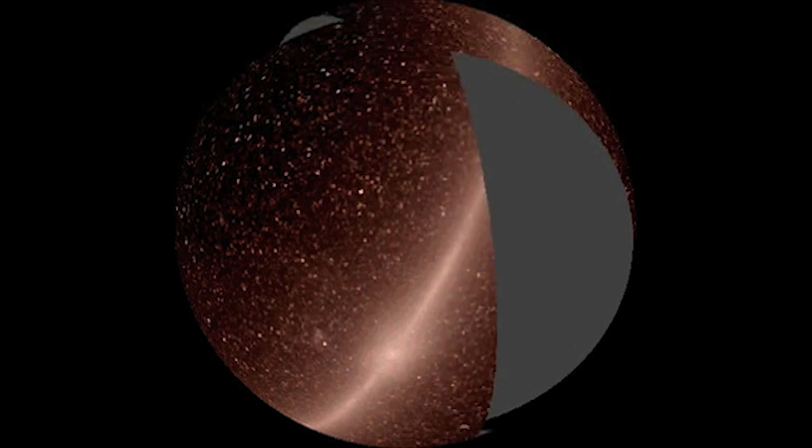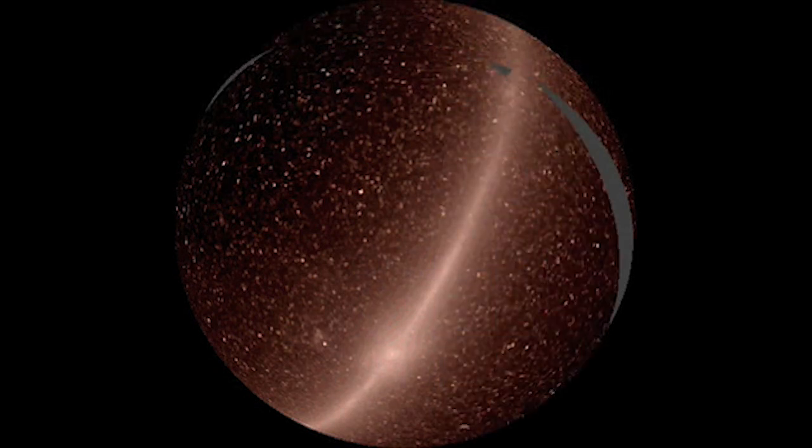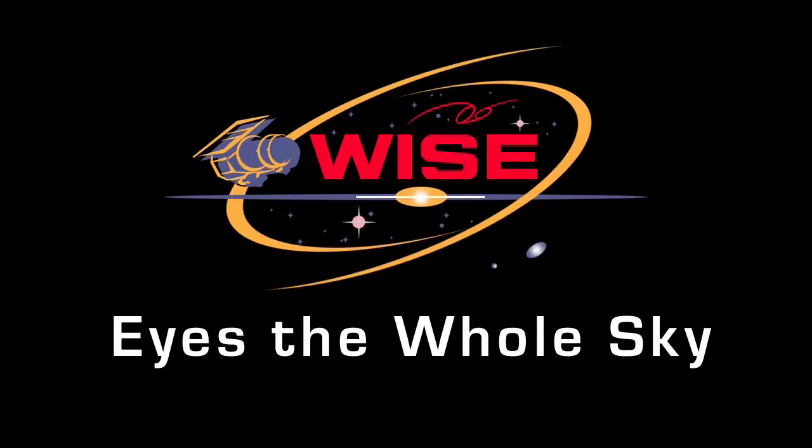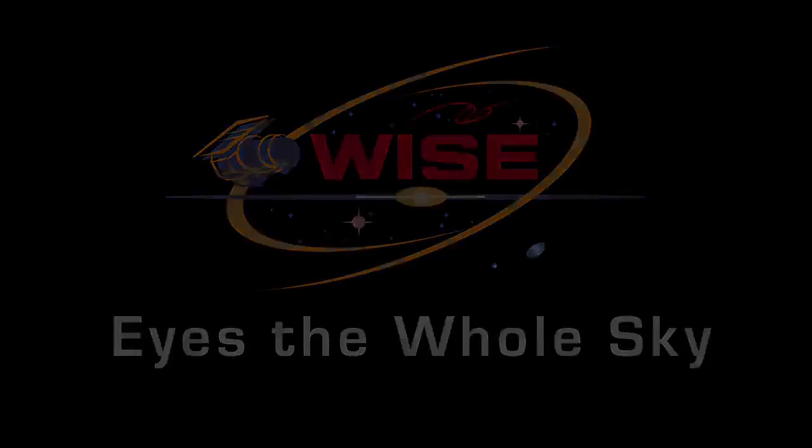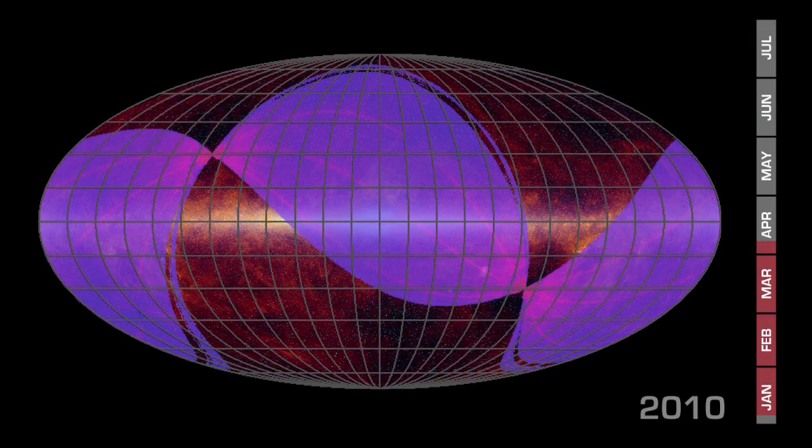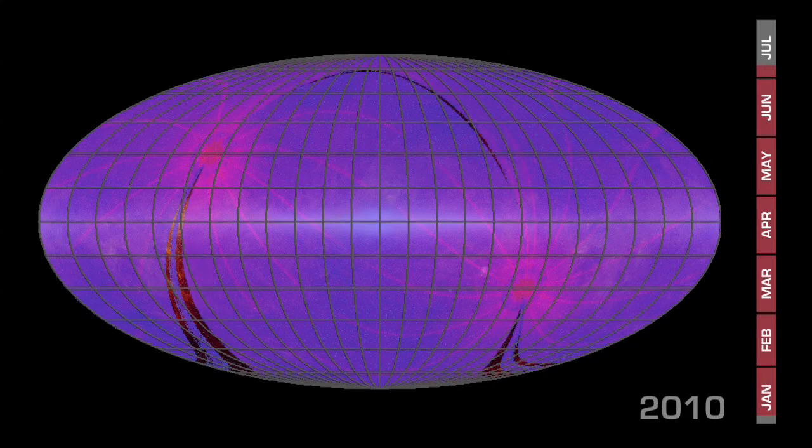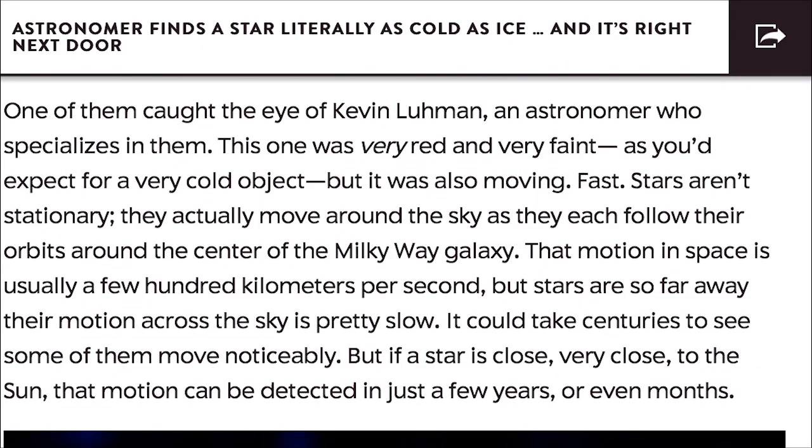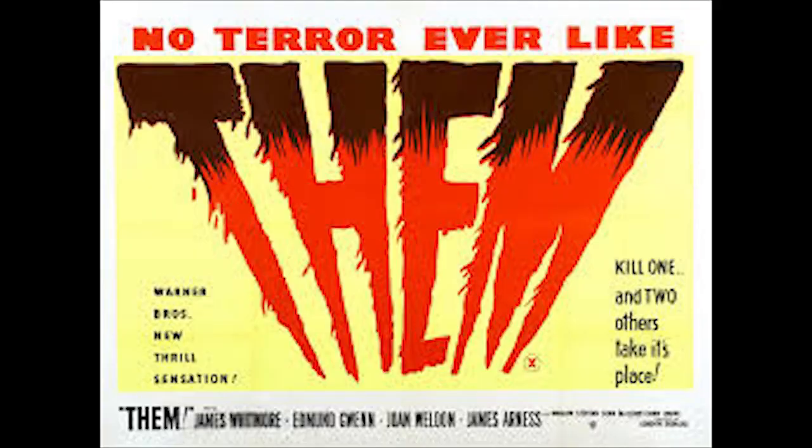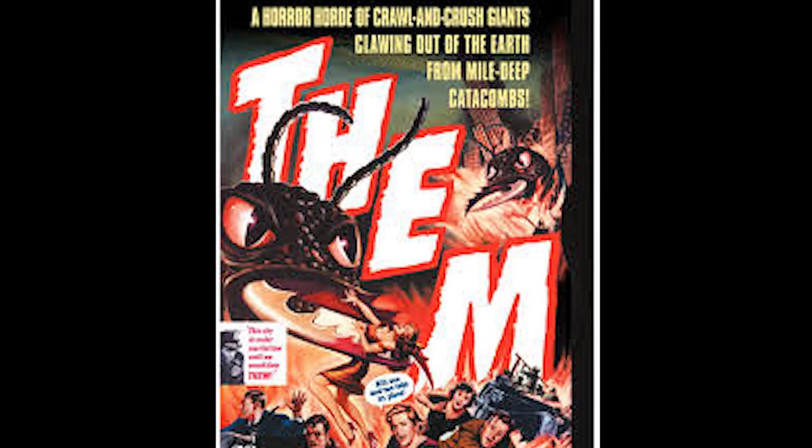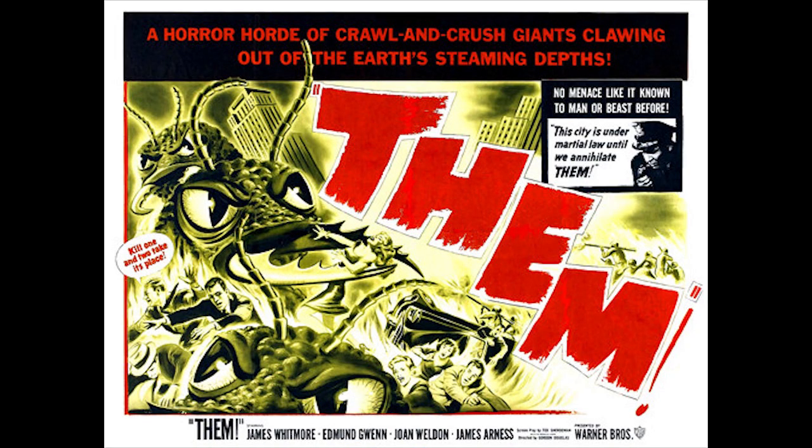You see, WISE observed the entire sky several times over in its short 13-month lifetime. It was looking at cooler and downright cold objects in the universe. It saw stars, dust clouds, superconductors, galaxies, mediocre conductors, and brown dwarfs—hundreds of brown dwarfs, in fact.